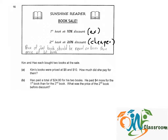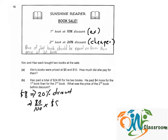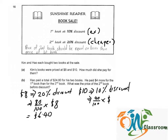The $8 book is given a 20% discount, so the selling price is 80% of $8 — that is 80/100 times $8. Kim just needs to pay $6.40. For the $10 book, the more expensive one, there is only a 10% discount, so the selling price is 90/100 times $10, which equals $9.